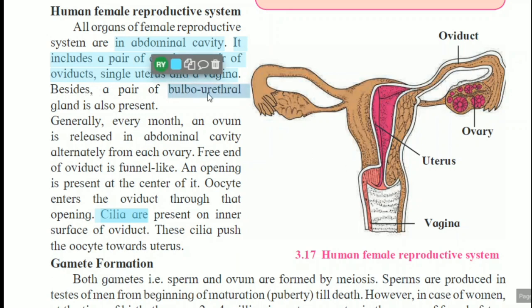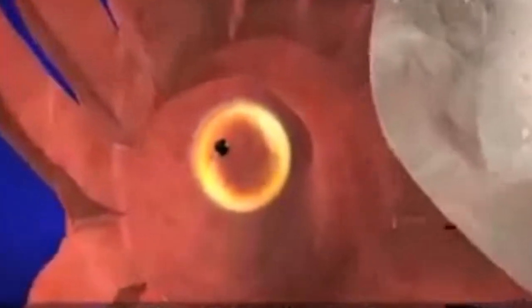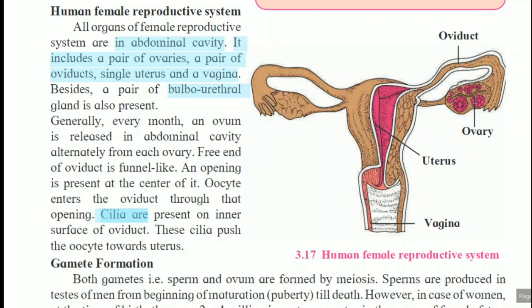A pair of bulbo-urethral glands is also present. Generally, every month an ovum is released into the abdominal cavity alternately from each ovary — two ovaries are there. The free end of the oviduct is funnel-like with an opening at its center, having finger-like projections. Whatever ovum is formed, it passes through this opening via the oviduct or fallopian tube towards the uterus.